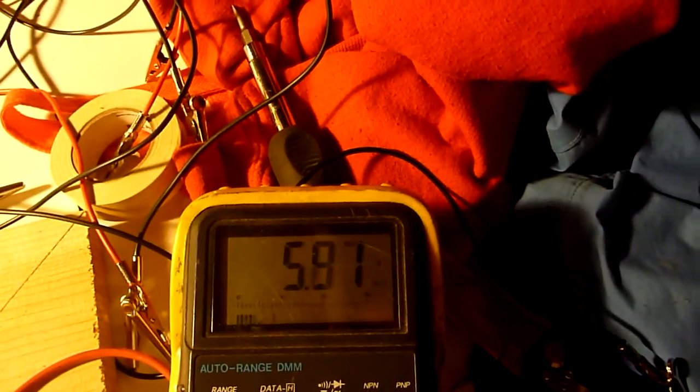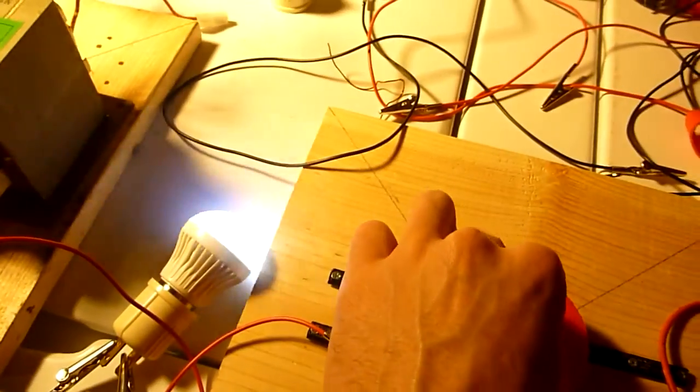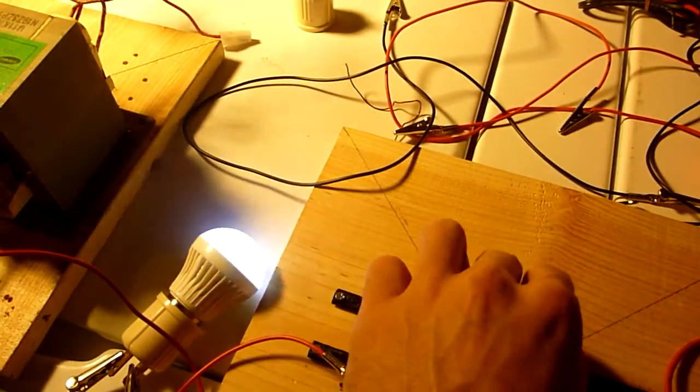But if you switch to DC, it's just going to show you 6 volts your input. But it's easily lighting this 5 watt light bulb.